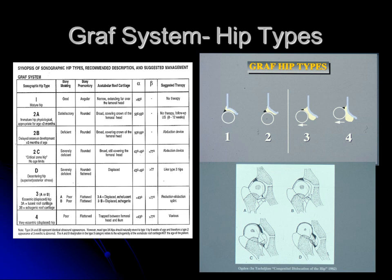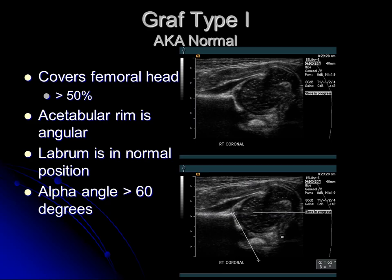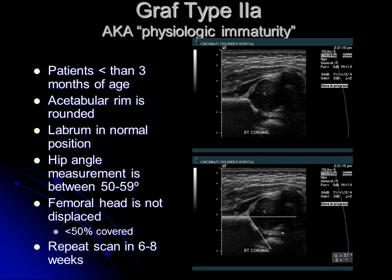There is a grading system from normal to abnormal — it's the Graf system. It goes from type 1, a normal hip, to type 4, a frankly dislocated hip, with a variety of findings in between. Graf type 1 is a normal hip. On coronal images you draw your line down the iliac, and the acetabulum should cover the femoral head at least 50% or greater. The morphology of the acetabular rim is nice and angular, the labrum is in normal position, the alpha angle is 60 degrees or greater, and transverse imaging shows no dynamic instability. That is by far the most common finding I see.